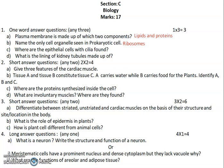Question 1c: where are the epithelial cells with cilia formed? This question is from the chapter 'Tissues.' Epithelial cells with cilia are found in the respiratory tract.